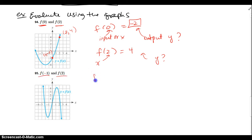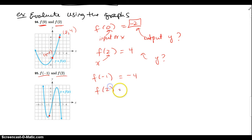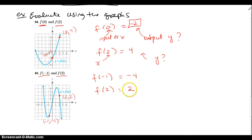For f(−1), I walk to x equals negative 1 on the graph and go down approximately 4 units, so the y-value is about negative 4. For f(2) on the next function, I'm at x equals 2 and it looks like the output is 2. So the ordered pairs are (−1, −4) and (2, 2).